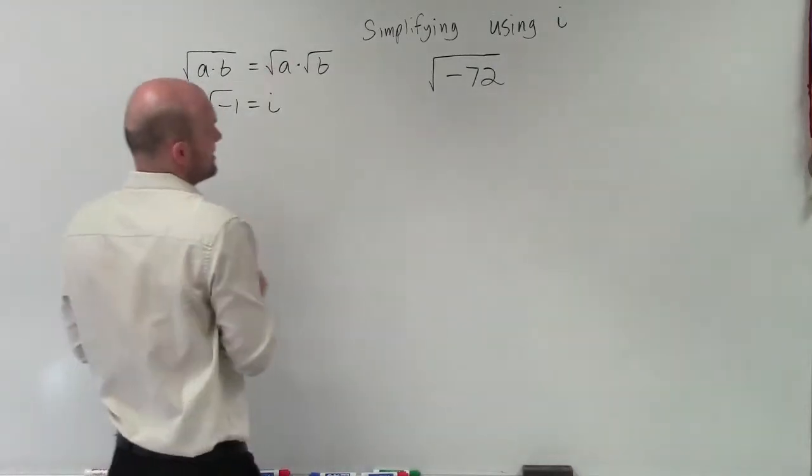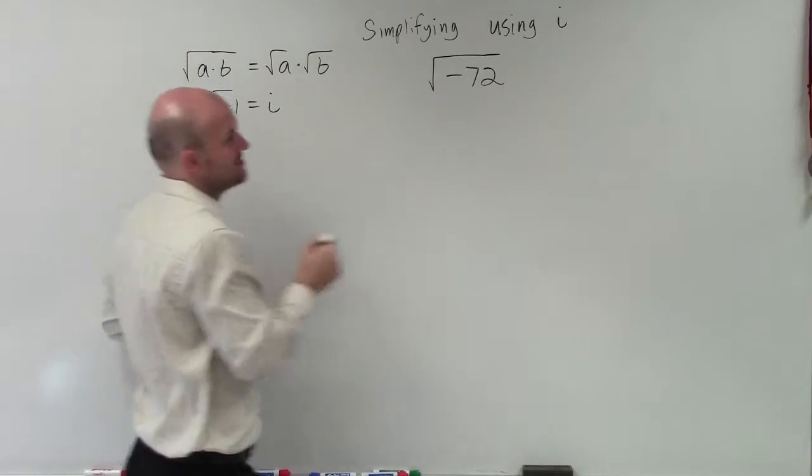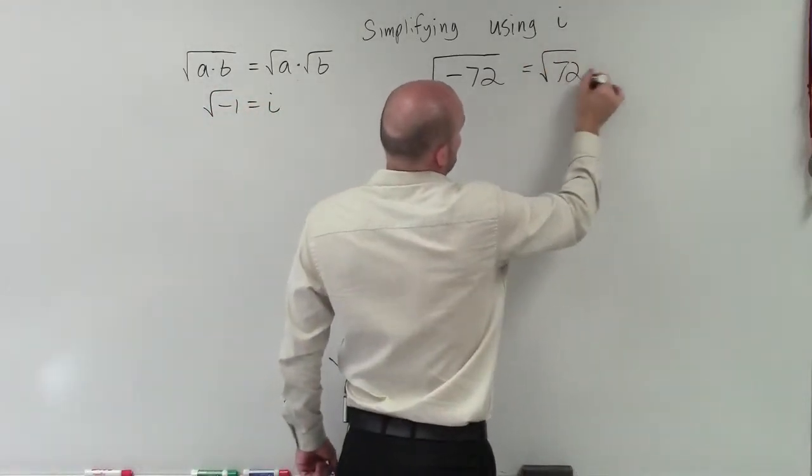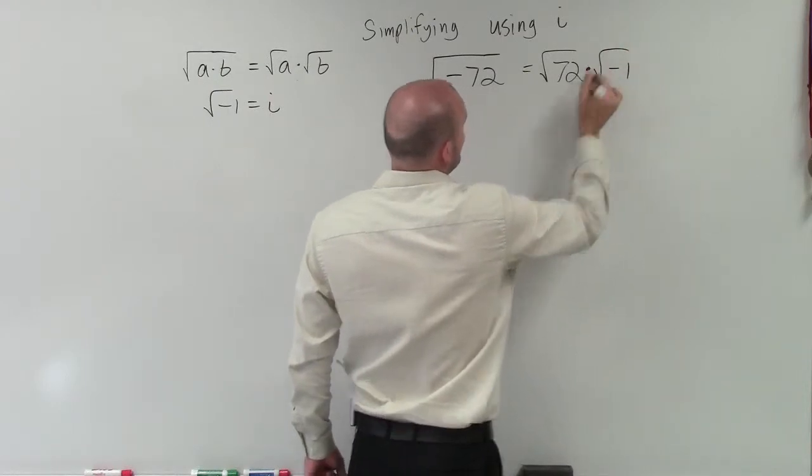So the first thing we're going to do is, again, we want to break this up into a product with negative 1 because we know that represents i. So therefore, I can have the square root of 72 times the square root of negative 1.